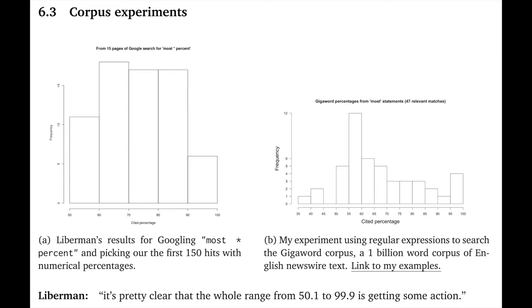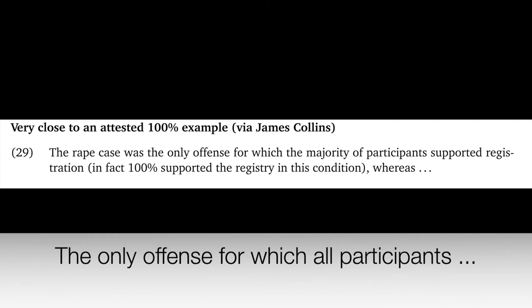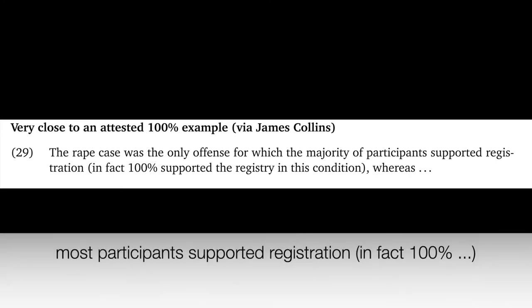My data don't contain an actual 100% case, but I have this closely related one from James Collins. It involves majority of. The example he found says: the rape case was the only offense for which the majority of participants supported registration. In fact, 100% supported the registry in this condition. So in this case, it was 100%, but you can see why they had to say the majority of. If they had said the rape case was the only offense for which all participants, it would have left open whether there were lots of other cases that would have passed the majority threshold. So they had to say majority to establish the stronger claim. And then they gave the 100% information to add on to that. I think this example would be fine if we use most participants instead of the majority of participants. And so that's a little bit of evidence that most is consistent with all, even though in general, in most situations, if you can say all, you shouldn't choose the weaker form most. That's a pragmatic interaction.